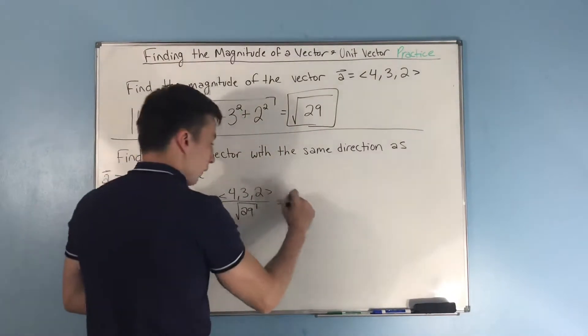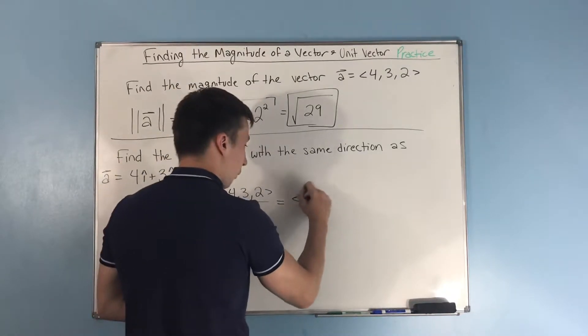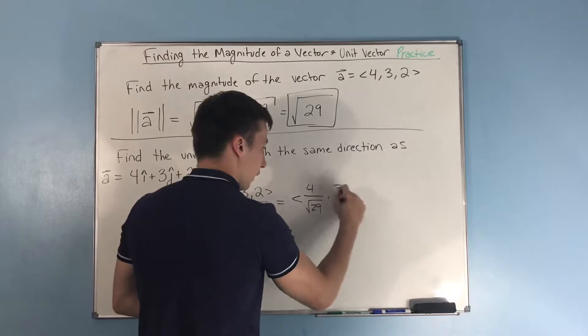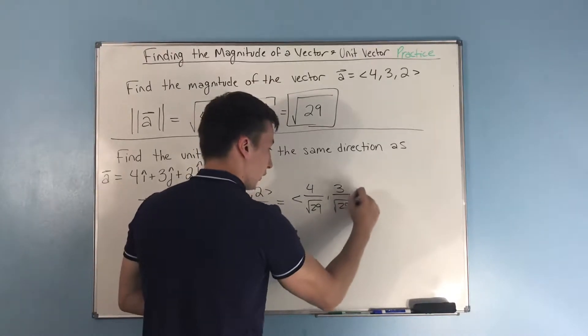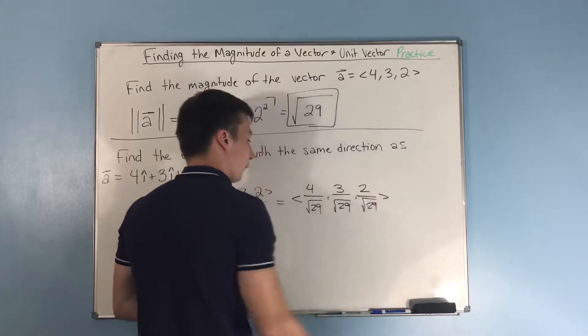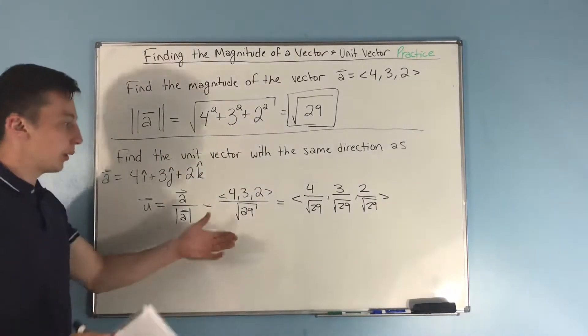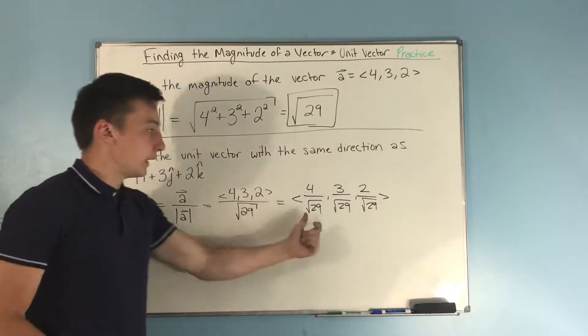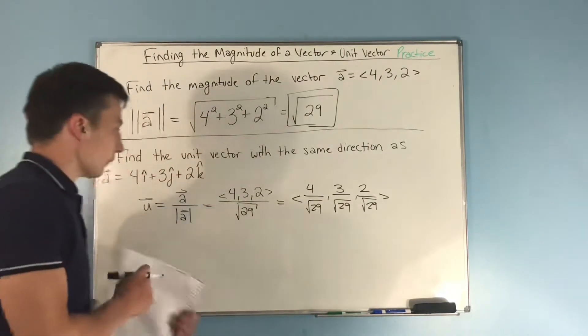So, this is the same thing as 4 over √29, 3 over √29, comma, 2 over √29. Kind of just distribute through that division by √29 to each component.